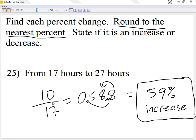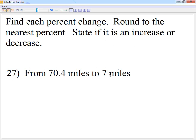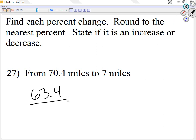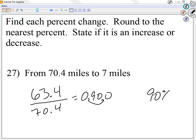Looking at number 27: from 70.4 to 7. Subtract the two numbers first — 70.4 minus 7 equals 63.4. Divide by the first number, 70.4. According to the calculator I get 0.900, so moving two places to the right gives 90%. Since the number went down from 70.4 to 7, I call this a 90% decrease.